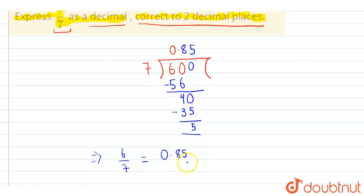Also this clearly shows that this is correct up to two decimal places as we can see clearly there are only two digits after decimal. Hence our answer is 0.85.